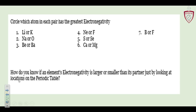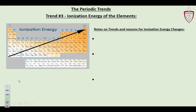Circle which one of each pair has the greatest electronegativity. We're going to go to Table S and look these things up — they're all listed there. If you can read the periodic table on Table S, you can find the electronegativity value. How do you know if an element's electronegativity is larger or smaller than its partner? Just look at locations on the periodic table using the trend we just discussed: as you go across, electronegativity gets bigger; as you go down, it goes down. This property also goes along with metallic character, because all those properties are related to electronegativity and the nuclear shielding and effective charge.